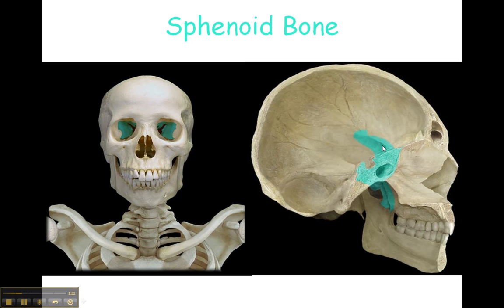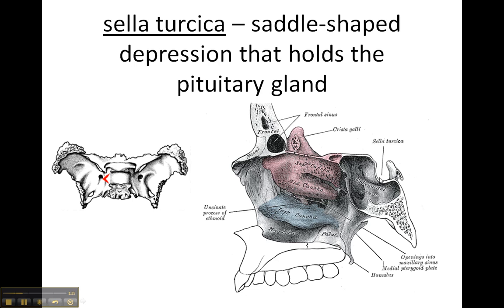Here it is again in blue, nicely highlighted. The first thing you need to know about the sphenoid bone is that there is a structure called the sella turcica. It is a saddle-shaped depression, meaning that something can just sit there in it, and it holds the pituitary gland. The pituitary gland is very important because it is considered the master gland — it is responsible for so many major body functions, including growth, metabolism, reproductive cycles, and many more things. That's part of the endocrine system.